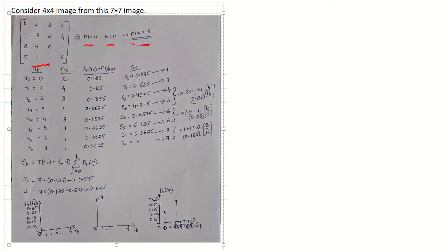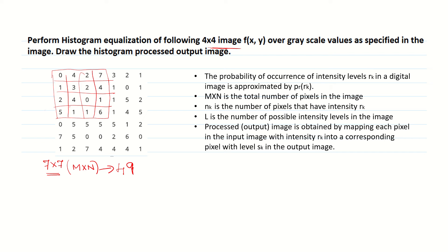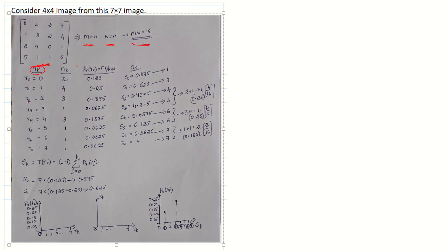The first step is to get the values of RK, the intensity levels. We write R0, R1, R2, R3, R4, R5, R6, R7 — these are the different intensity values present in the four cross four image. R0 = 0, R1 = 1, R2 = 2, R3 = 3, R4 = 4, R5 = 5, R6 = 6, R7 = 7.